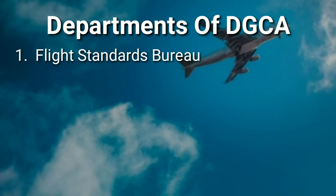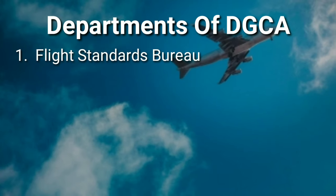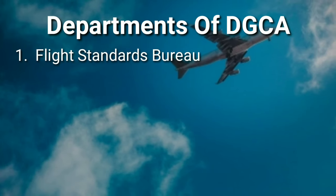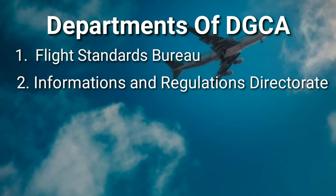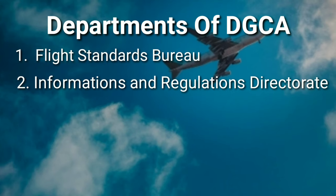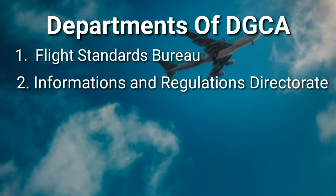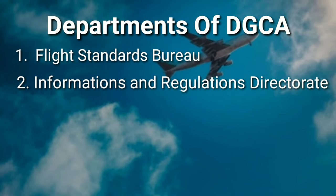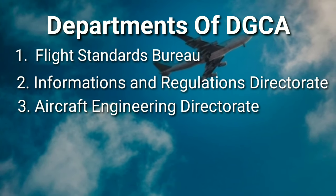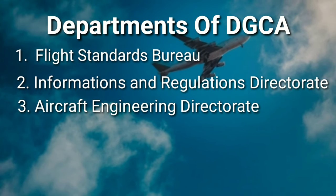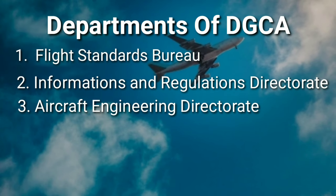There are different departments of DGCA. Number one is the Flight Standards Bureau, responsible for flight operations and airworthiness inspections. Number two is the Informations and Regulations Directorate, for bilateral air services and operations of foreign airlines in the country. Number three is the Aircraft Engineering Directorate, in charge of Aero Engineering, Laboratories, Environment, and Air Transport Divisions.